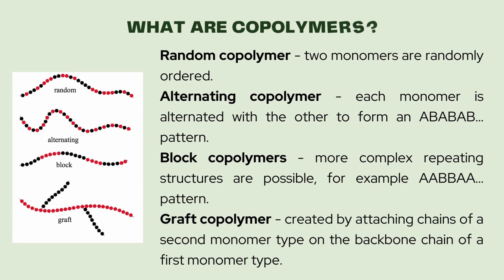The four structures of copolymer are random, alternating, block, and graft. Two monomers that are randomly ordered are called a random copolymer. In an alternating copolymer, each monomer is alternated with others to form an ABAB pattern.